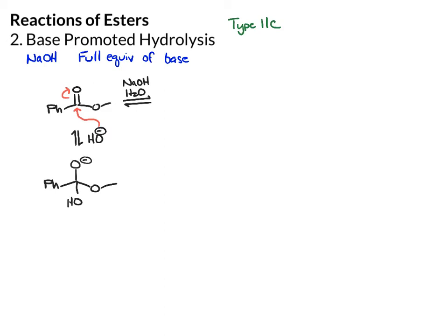This gives a tetrahedral intermediate. At this point, really the OH and the O-methyl group are fairly equivalent in terms of leaving group ability. So you have equal likelihood of losing either. If you bring these electrons back down and lose the OH group, you just revert to starting material.